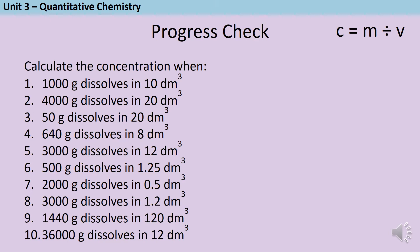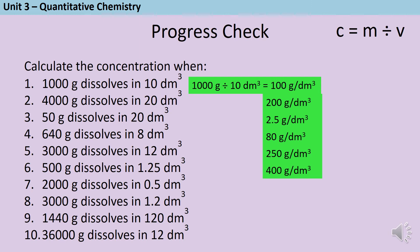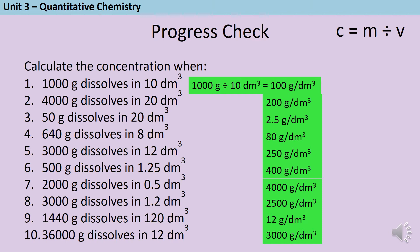Pause the video and have a go at some of these calculations for yourself. Each time you're dividing the mass by the volume. So: 1000 grams divided by 10 dm³ gives 100 g/dm³; 4000 divided by 20 gives 200; 50 divided by 20 gives 2.5; 640 divided by 8 gives 80; 3000 divided by 12 gives 250; 500 divided by 1.25 gives 400; 2000 divided by 0.5 gives 4000; 3000 divided by 1.2 gives 2500; 1440 divided by 120 gives 12; and 36000 divided by 12 gives 3000 grams per decimetre cubed.